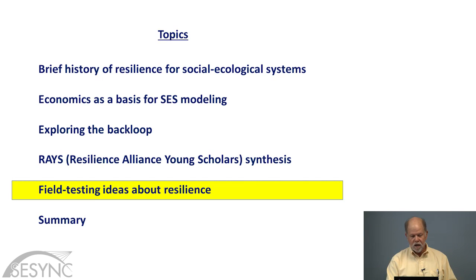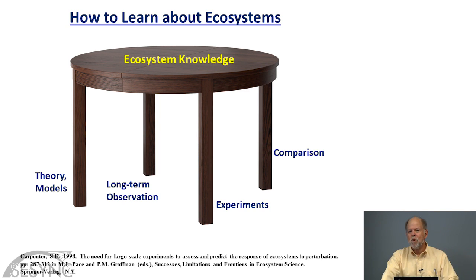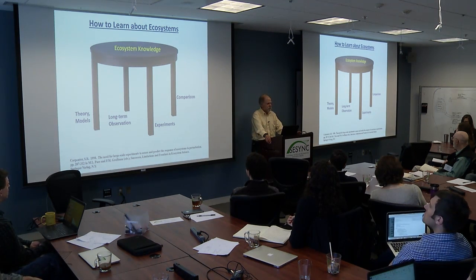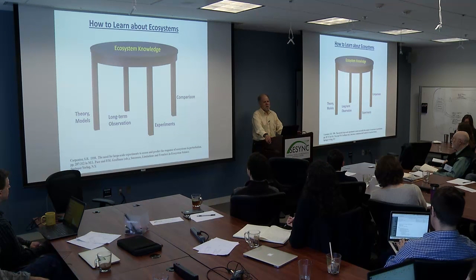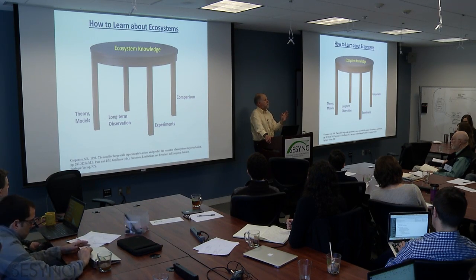Field testing ideas about resilience — I'm moving toward a wrap-up. About 20 years ago I published a paper saying there are four ways to learn about ecosystems: theory and models, long-term observation, experiments, and comparative studies of ecosystems. Our most robust concepts about ecosystems are the ones supported by all four legs of the table. As a conjecture, I would suggest that the same is true for social ecological systems. There are lots of longitudinal observations of social ecological systems for long periods of time, and lots of comparative studies of different societies and the way they have interacted with their environments.